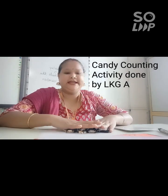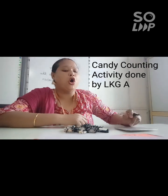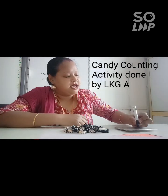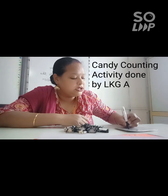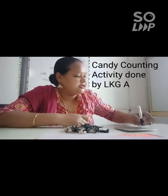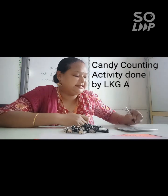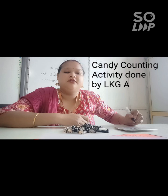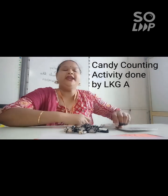We had 16 candies. Write down the number in the box. Start it. First we write 1, after this 6. 1, 6. 16. 1, 6. 16. Very good.